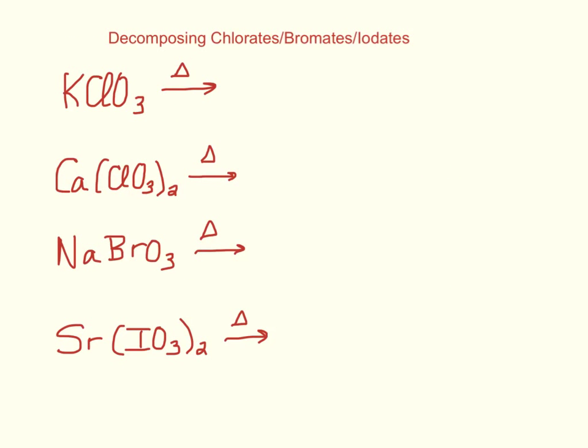We're also going to memorize what happens when we heat chlorates, bromates, or iodates. So chlorate, remember, is ClO3 minus, bromate is BrO3 minus, and iodate is IO3 minus. In this case, when we heat them, we get oxygen gas.